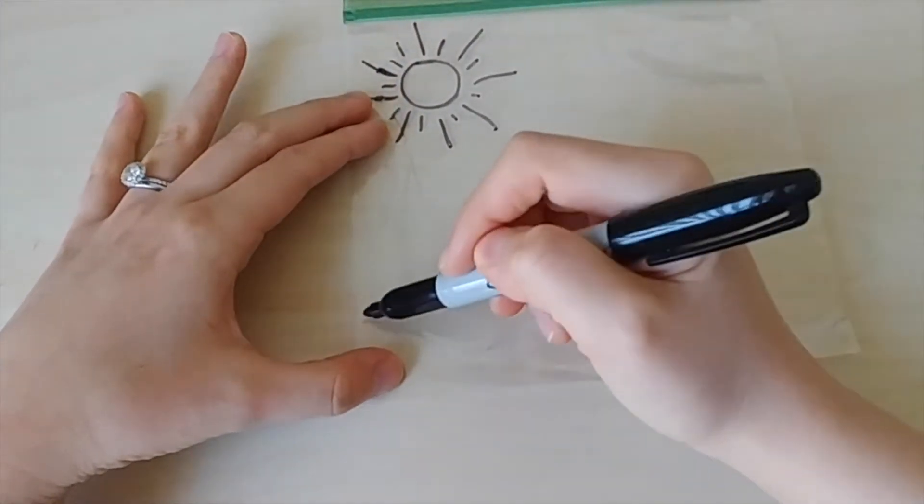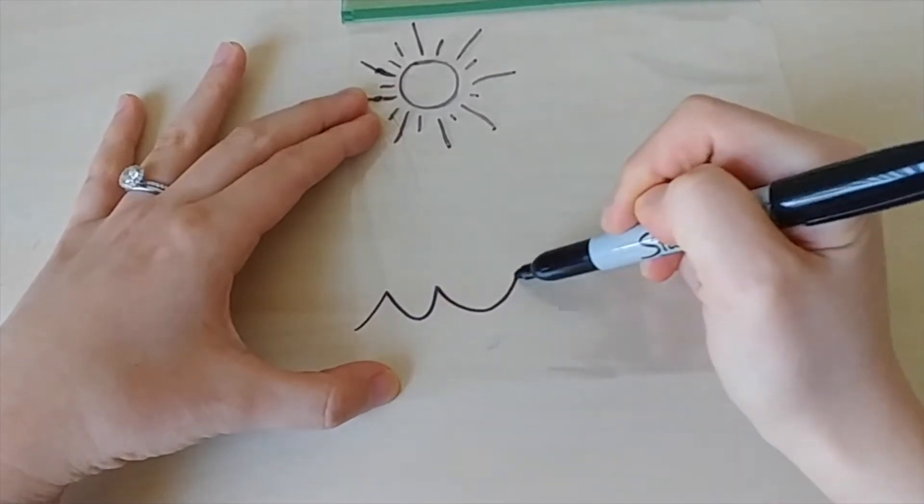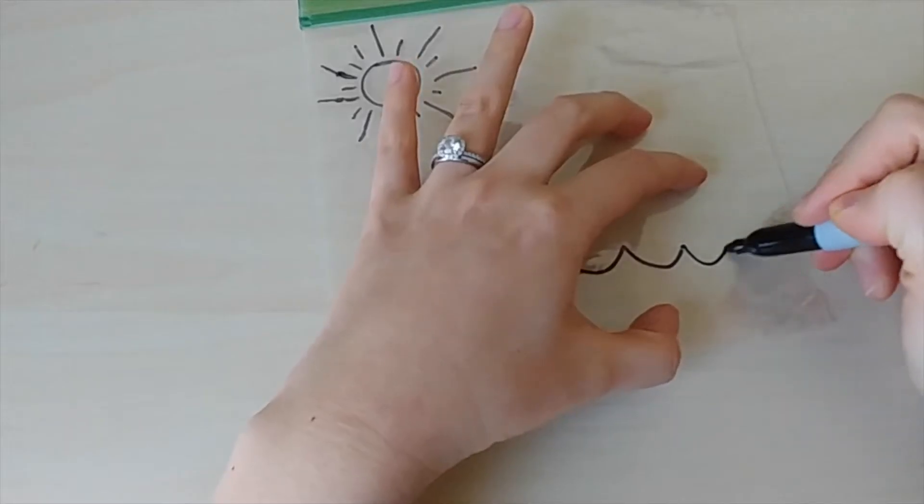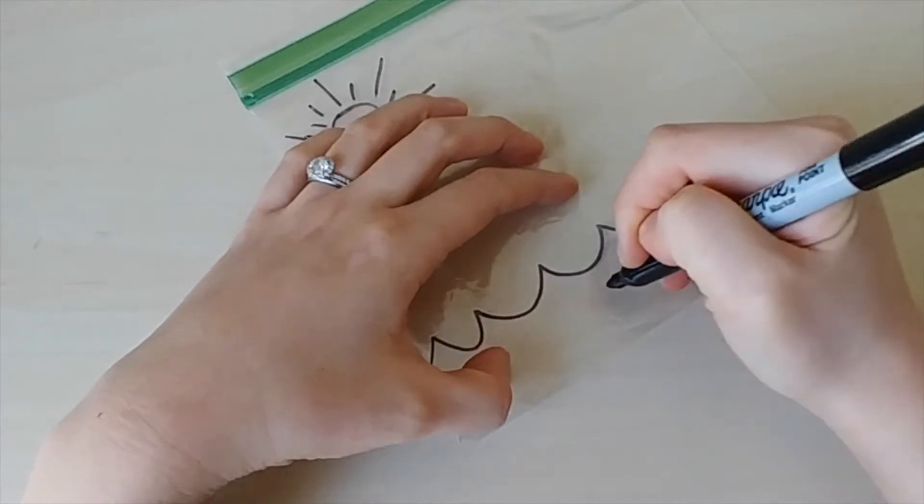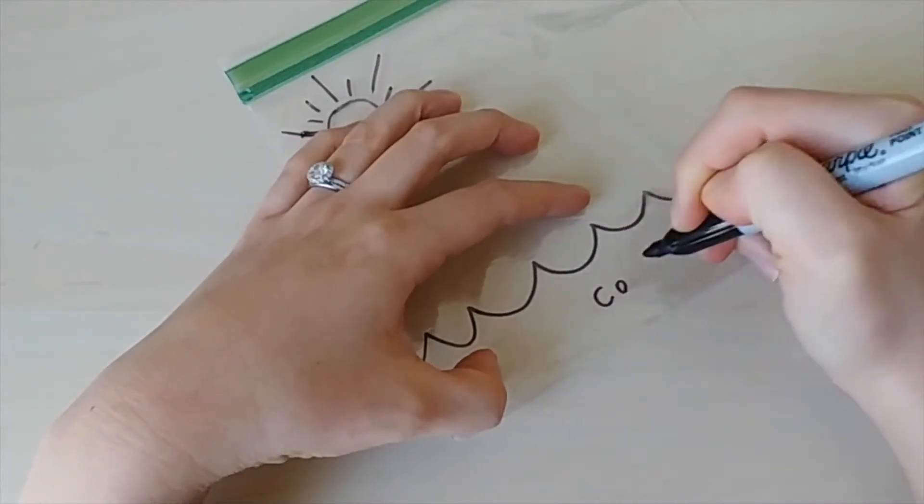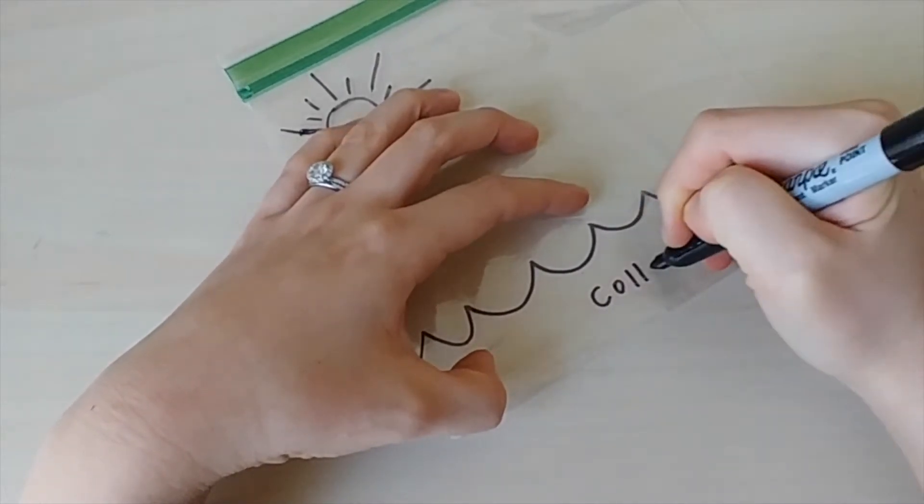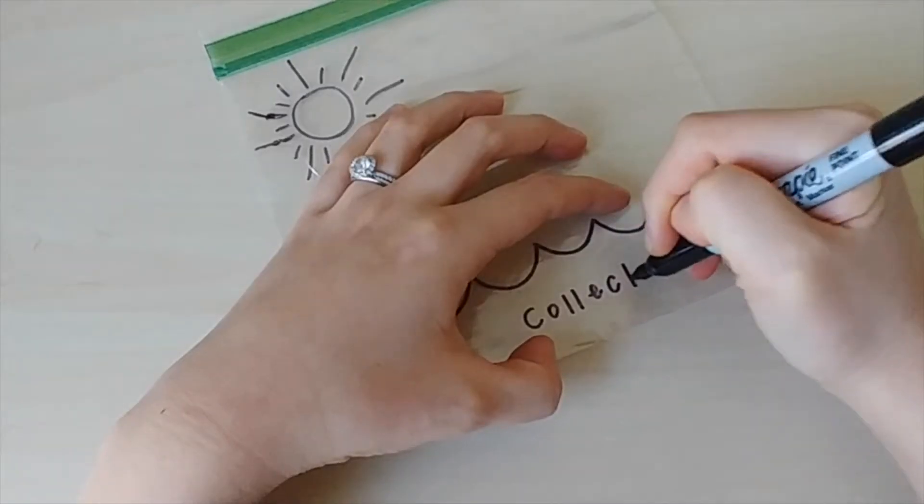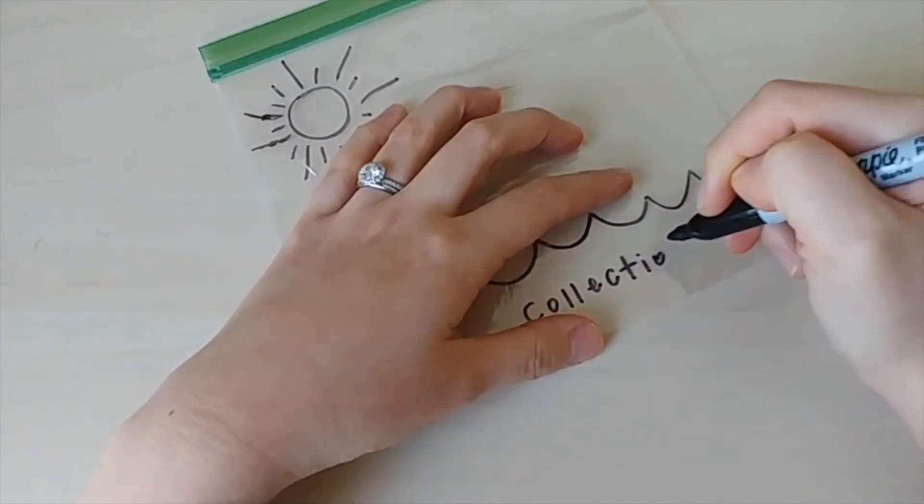Next, about three centimeters from the bottom of the bag, draw some waves to represent water that is being collected on Earth. And we'll label this 'collection,' which is spelled C-O-L-L-E-C-T-I-O-N.